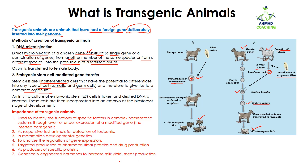Transgenic animals are very important in the study of different fields of biology. They can be used to identify the function of specific factors in complex homeostatic systems through over or under expression of a modified gene — meaning you can study whether a gene expression is increased or decreased. They can also be used as responsive test animals for the detection of toxicants.